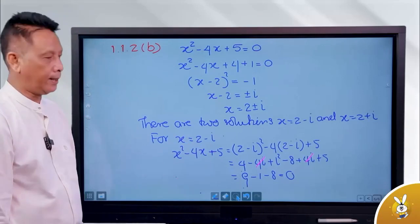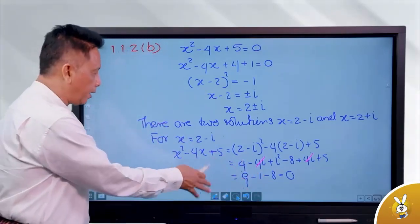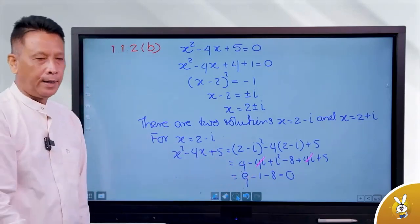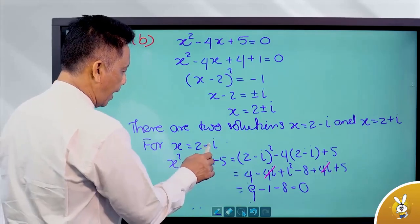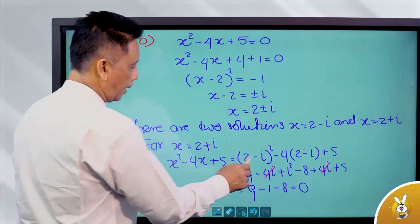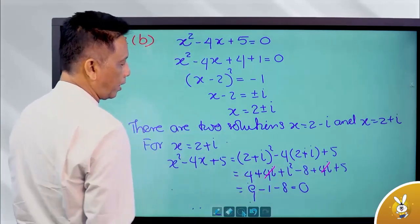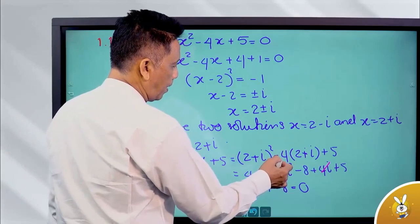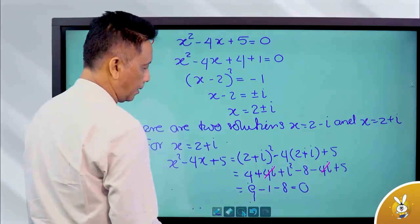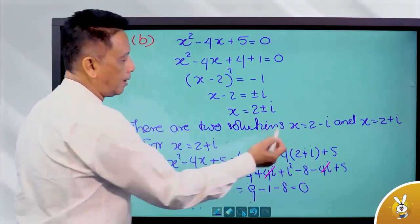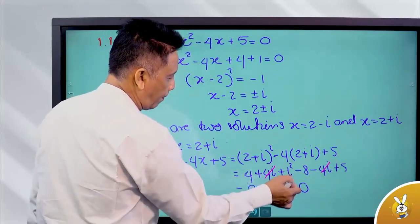H equal to 2 minus I. H equal to 2 plus I. Anyway, H equal to 2 plus I. Then there are 2 plus I. If there is 2 plus I and 0 to 2, the second one is plus 2 minus I and minus I. The second one is minus I squared minus I, is minus I. The second one is minus I and minus 4. The second one is plus I and minus I.